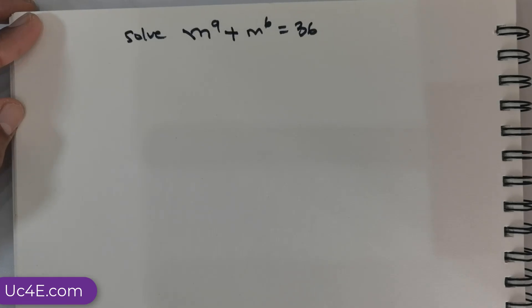Hi everybody, we got this question: m raised to the power of 9 plus m raised to the power of 6 equals 36.